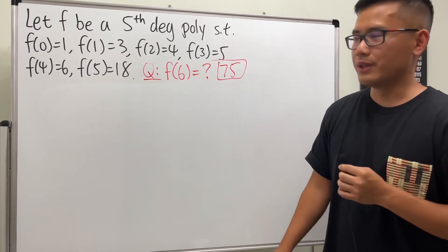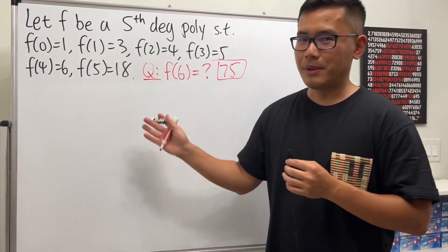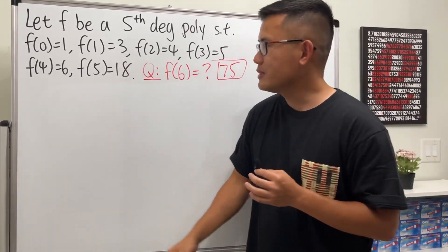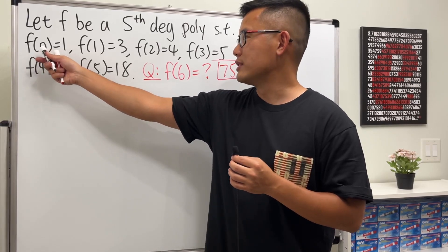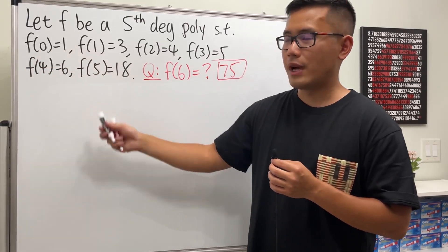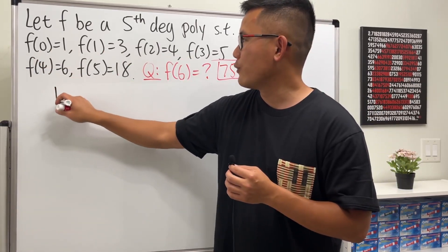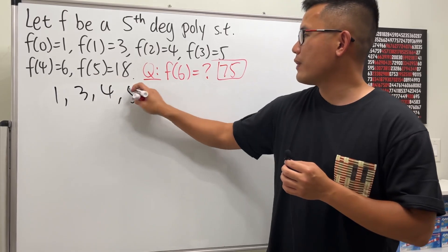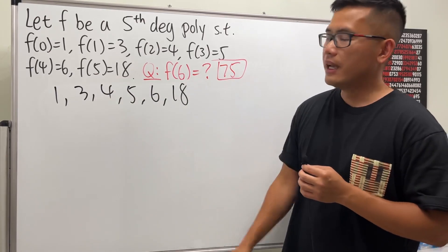So this is how you can do it. This is just a polynomial, and they give us the value from x = 0 to x = 5, so we can just put out the value of the function. We have 1, 3, 4, 5, 6, and also 18.